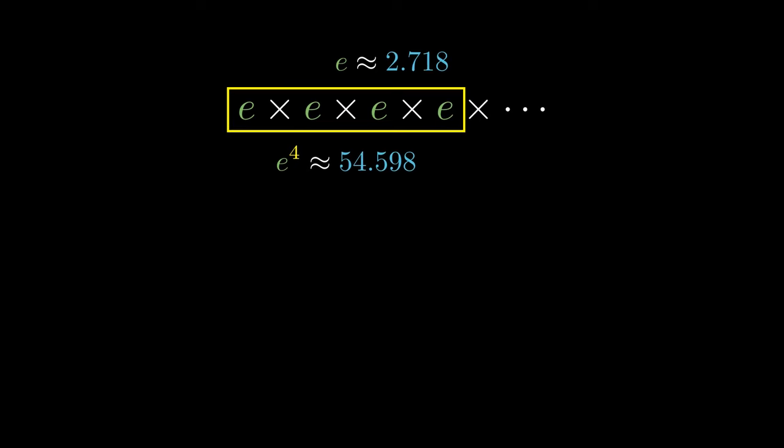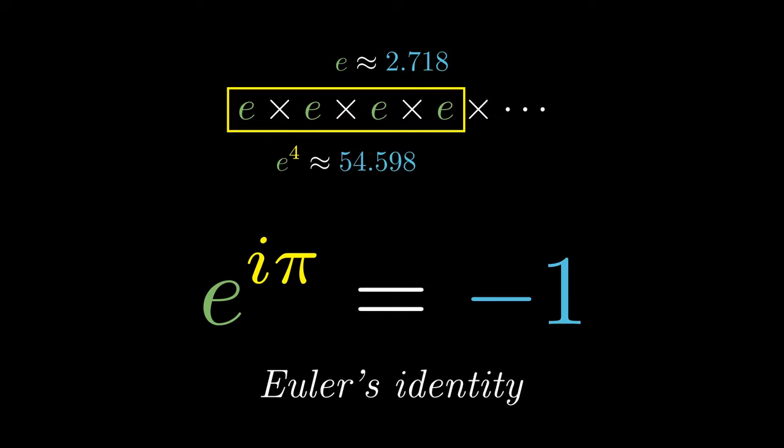So this is the question. What is e to the power of i times pi, where i is the square root of negative 1? Try to solve this question for yourself. When you're ready, the answer is negative 1. This is known as Euler's identity. There are 9 more equations to go.